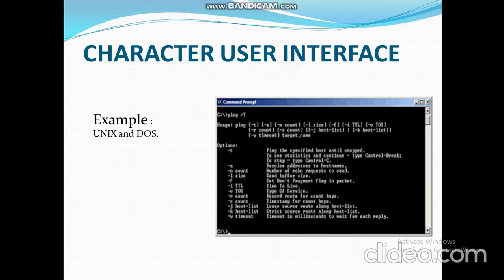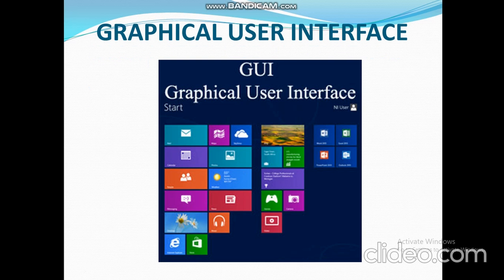Next is Graphical User Interface. This interface is graphics-based and interactive in nature. Different types of devices such as mouse, keyboard, etc. are used to interact with the system. GUI is more user-friendly — unlike CUI, it does not require the user to memorize commands. Instead, the user uses different menus and options to communicate with the system. Windows is the most popular GUI operating system.